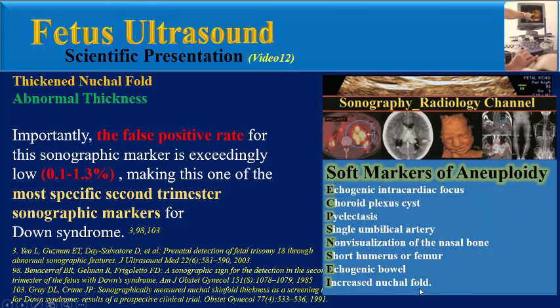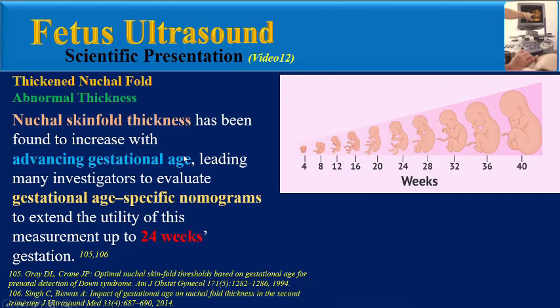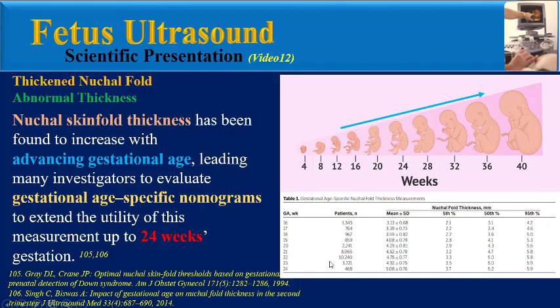Nuchal fold thickness has been found to increase with advancing gestational age, leading many investigators to evaluate gestational age-specific nomograms to extend the utility of this measurement up to 24 weeks gestation.